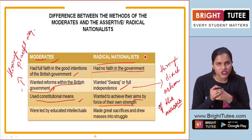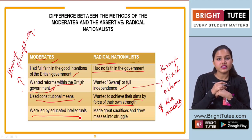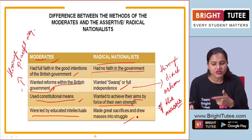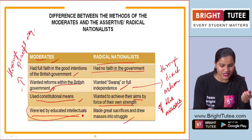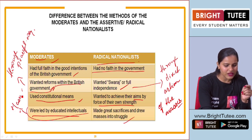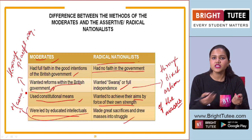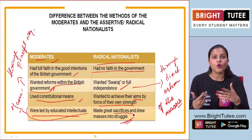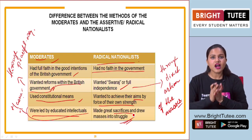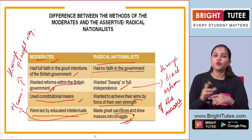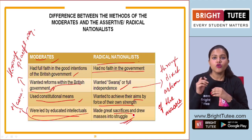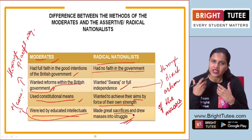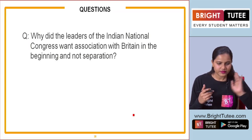The moderate leaders were led by educated intellectuals but did not involve the masses on a large scale - this is one of the key limitations of the moderates. The radical or assertive nationalists, however, made great sacrifices and believed in direct political action involving the masses - large numbers of common people who could rise against the British government, which they considered exploitative in nature.